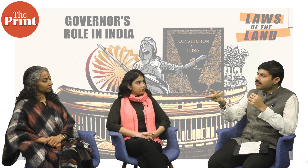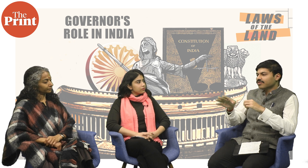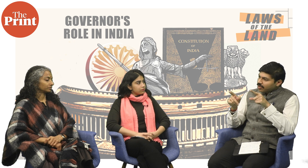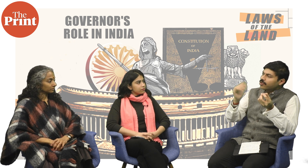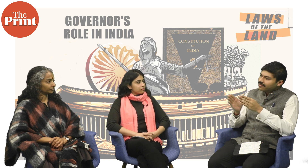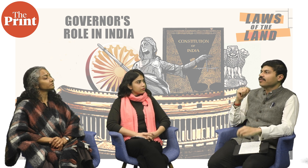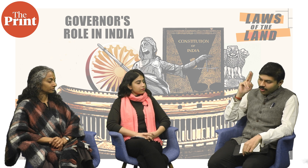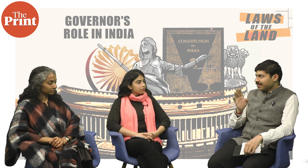The court also noted there is a difference between adjournment and prorogation. For prorogation, the assembly has to be dissolved under Article 174. An adjournment does not take away the speaker's right, as guardian of the house, to reconvene the session. On both counts — the declaration requirement and the validity of the sessions — the governor was found wrong, and the court said the governor must give his assent.